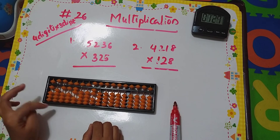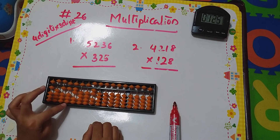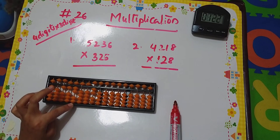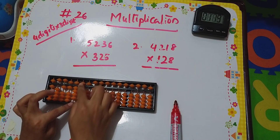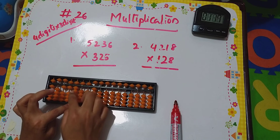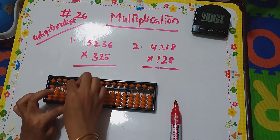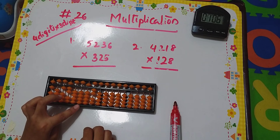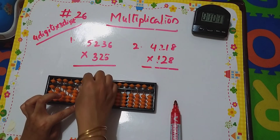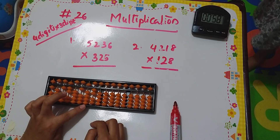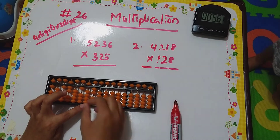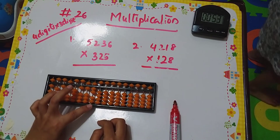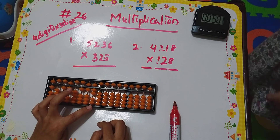Next I'll go for 5. I have to leave these two columns and start from here. 5 fives are 25 — 2, 5. How to add 5 here? Plus 10 minus 5 — done. Next, 5 fives — twenty-five done. Next, 5 twos are 10 — 1, 0 done. Then 5 threes are 15 — 1, 5 done. Next, 6 times 5 is 30.